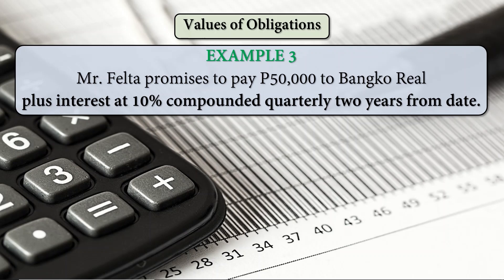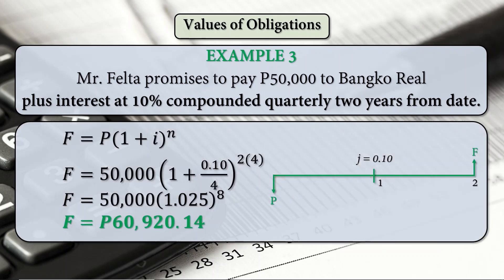Our third example uses the compound interest formula. Finding F as P times (1 plus I) raised to N: P is 50,000, I is 0.10 divided by 4 since it is quarterly, raised to 2 times 4. So 1 plus 0.025 raised to 8 gives a future amount of 60,920 pesos and 14 centavos. On the cash flow diagram, the present value is 50,000 and the future amount after two years using compound interest is 60,920.14.